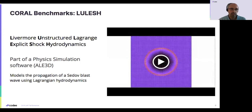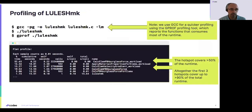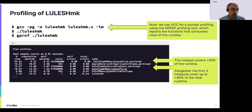LULESH is a large-scale hydrodynamics application from physics. Let's locate the profiling to find which is the hotspot function. Here you can see the code consists of more than 11 functions, not one single one, and you have at least four functions that consume more than 10% of the runtime. So potentially, you will want to optimize the performance of these four functions.